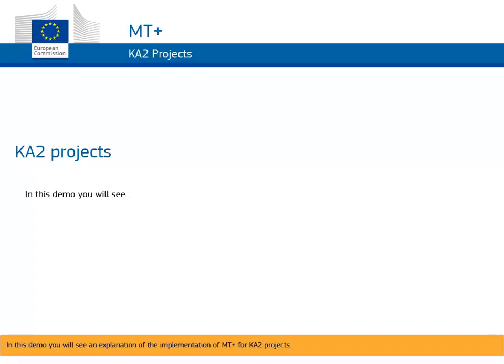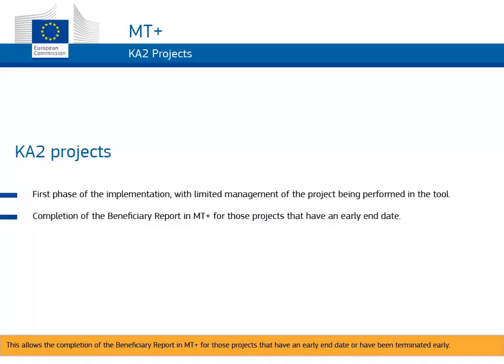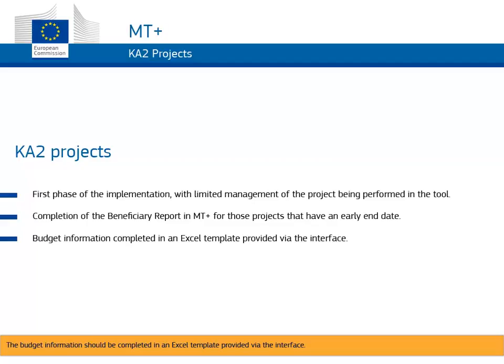In this demo you will see an explanation of the implementation of MTplus for KA2 projects. This is the first phase of the implementation, with limited management of the project being performed in the tool. This allows the completion of the beneficiary report in MTplus for those projects that have an early end date or have been terminated early. The budget information should be completed in an Excel template, provided via the interface.